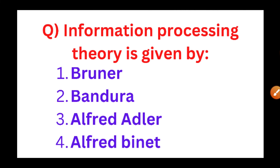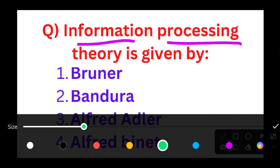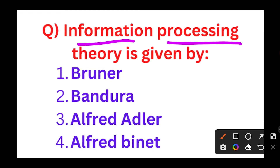The first question is: Information processing theory is given by. The options are Brunner, Bandura, Alfred Adler, and Alfred Binet. The information processing theory is given by Brunner. Brunner gave the information processing theory, which includes inactive, iconic, and symbolic.